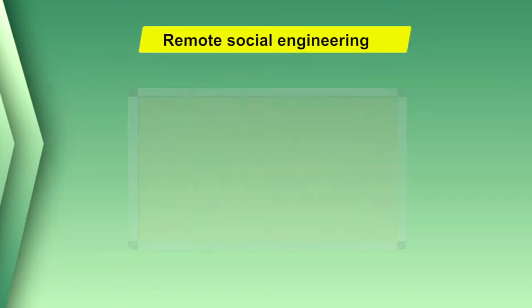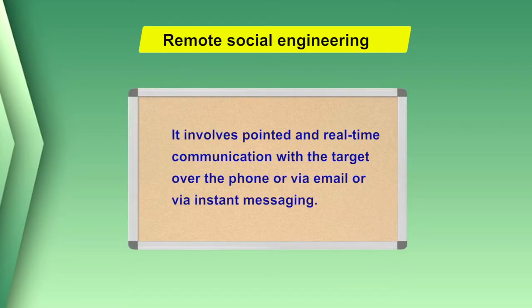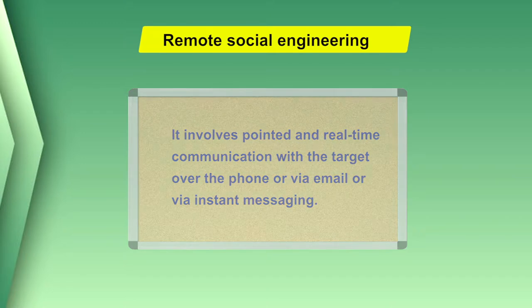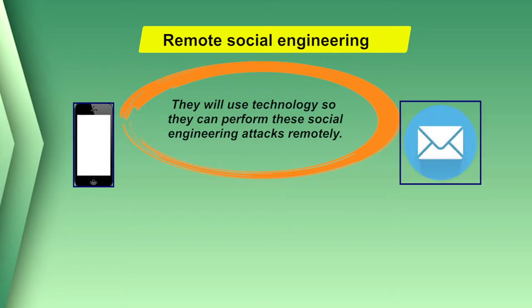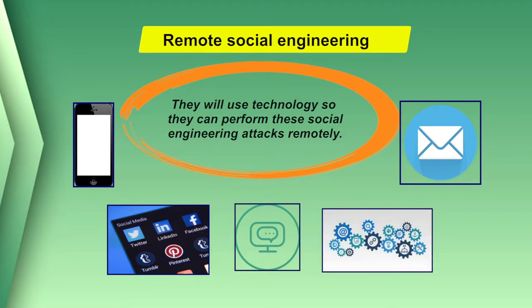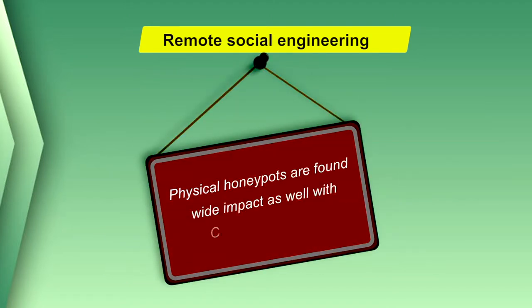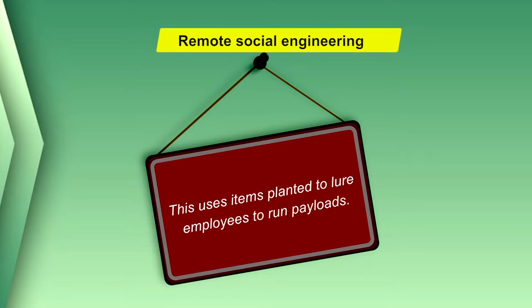The second type of social engineering is remote social engineering, which involves pointed and real-time communication with the target over the phone, via email, or via instant messaging. Attackers use technology to perform these social engineering attacks remotely — such as by phone, email, social media, instant messaging, and even from search engine results. Physical honeypots also have wide impact, using items like CDs and USB keys planted near employees to run malicious payloads.